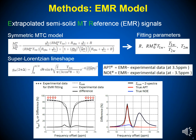Here, we propose the extrapolated semi-solid MT reference (EMR) signal technique based on the symmetric MT-pool model with a super-Lorentzian lineshape to quantify the APT and NOE signals. The two-pool system combined with super-Lorentzian lineshape can describe the behavior of conventional MT signals as a function of RF saturation frequency offset and amplitude. We fitted four parameters using wide-offset experimental data, excluding data points at small frequency offsets between +7 and −7 ppm.